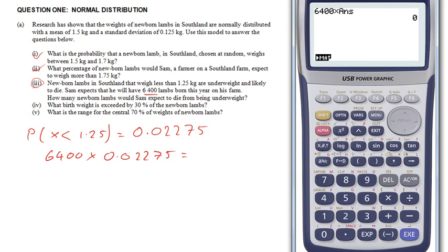That didn't work. Okay, let's try 6,400 times 0.02275. Should have worked. That tells me 145.6.